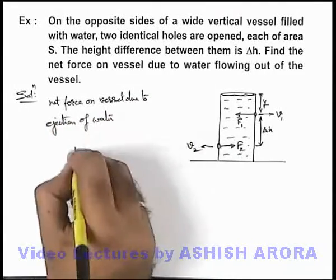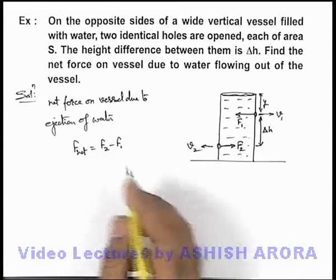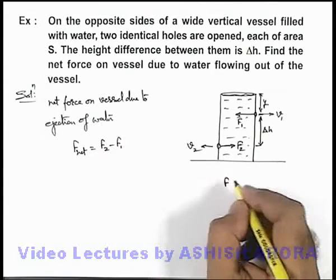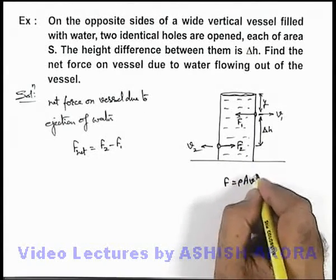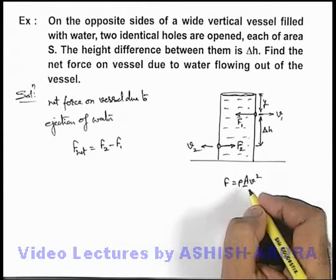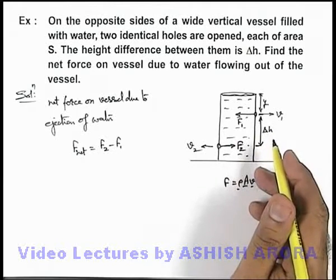This can be calculated as f net equals f2 minus f1. And we know the force of reaction due to ejection of water is given as rho A v squared, where A is the area of hole, rho is the density, and v is the efflux velocity with which fluid is coming out.